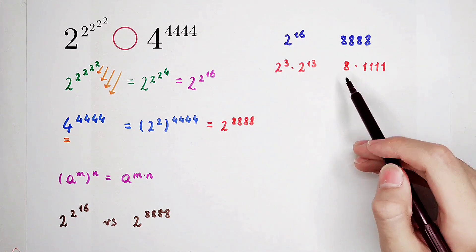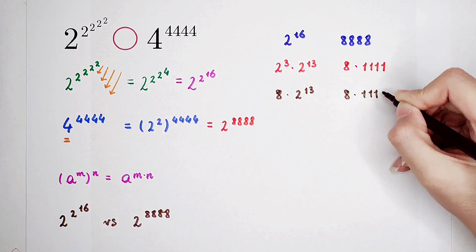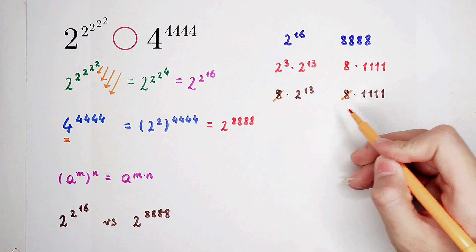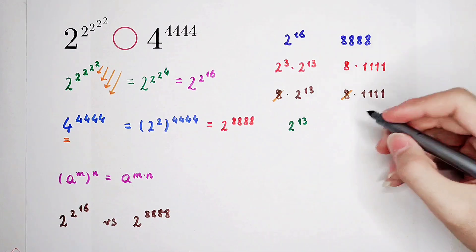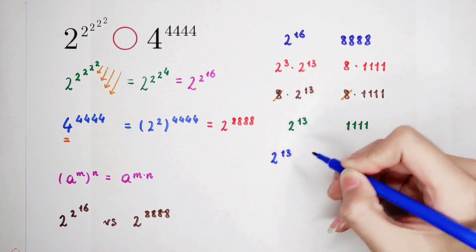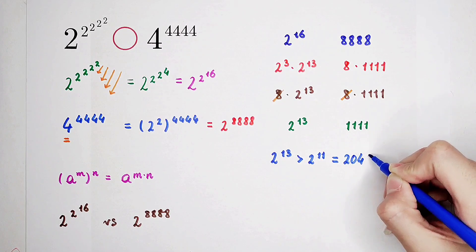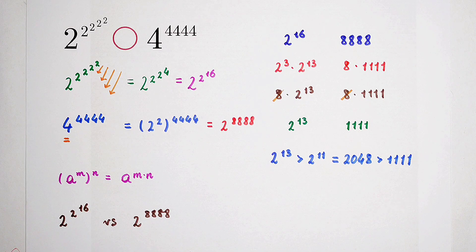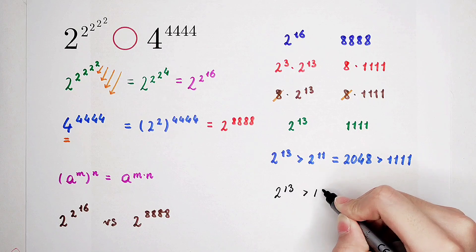We know that 2 to the power of 3 is just 8, so they're equal on that factor. Now we have 8 times 2 to the power of 13 versus 8 times 1,111. We only need to compare 2 to the power of 13 and 1,111. Obviously, 2 to the power of 13 is much bigger, since 2 to the power of 13 is bigger than 2 to the power of 11, and 2 to the power of 11 is 2,048, which is bigger than 1,111.